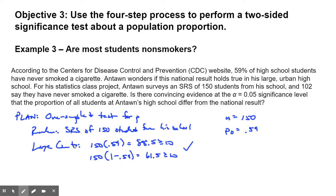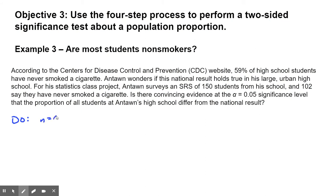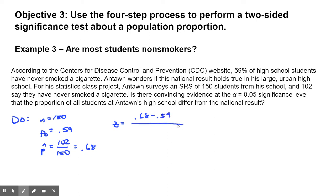Now we're actually going to do the calculation. Restate the sample size of 150 and the null value of 0.59. Find P-hat: 102 divided by 150 is 0.68. A little bit higher — potentially this percentage is not true for Anton's school, but let's find out. The Z standardized test statistic: take 0.68, subtract the null value 0.59, and divide by the square root of 0.59 times 1 minus 0.59, all divided by 150.